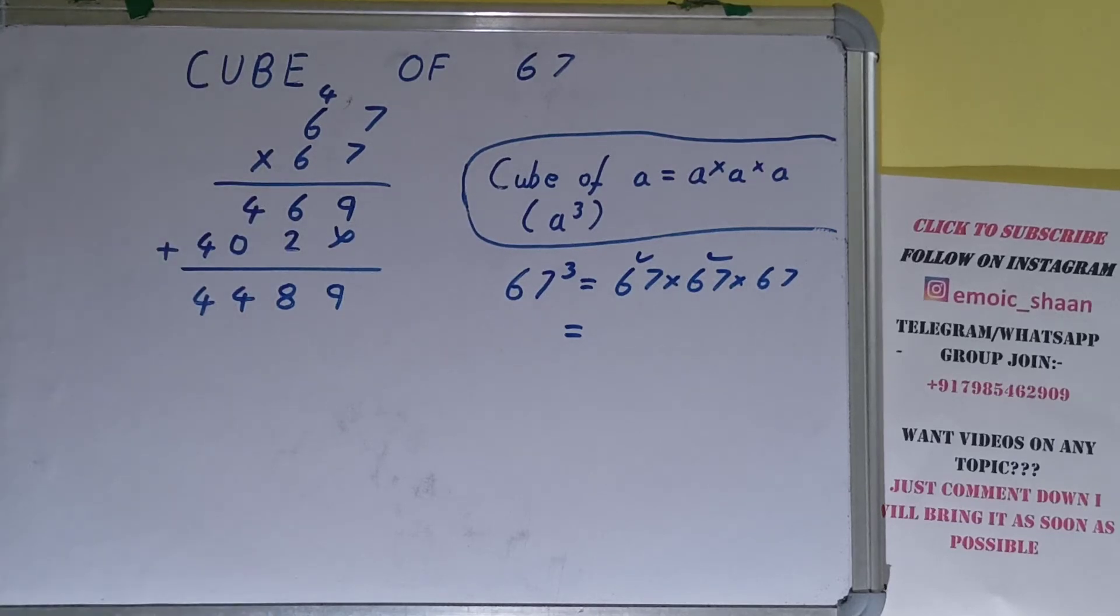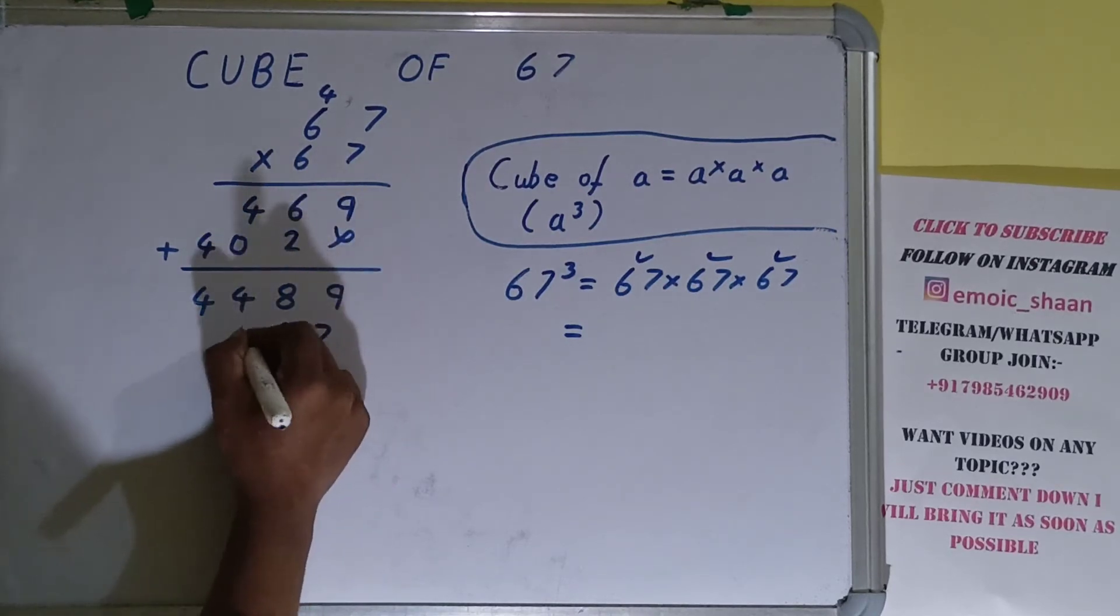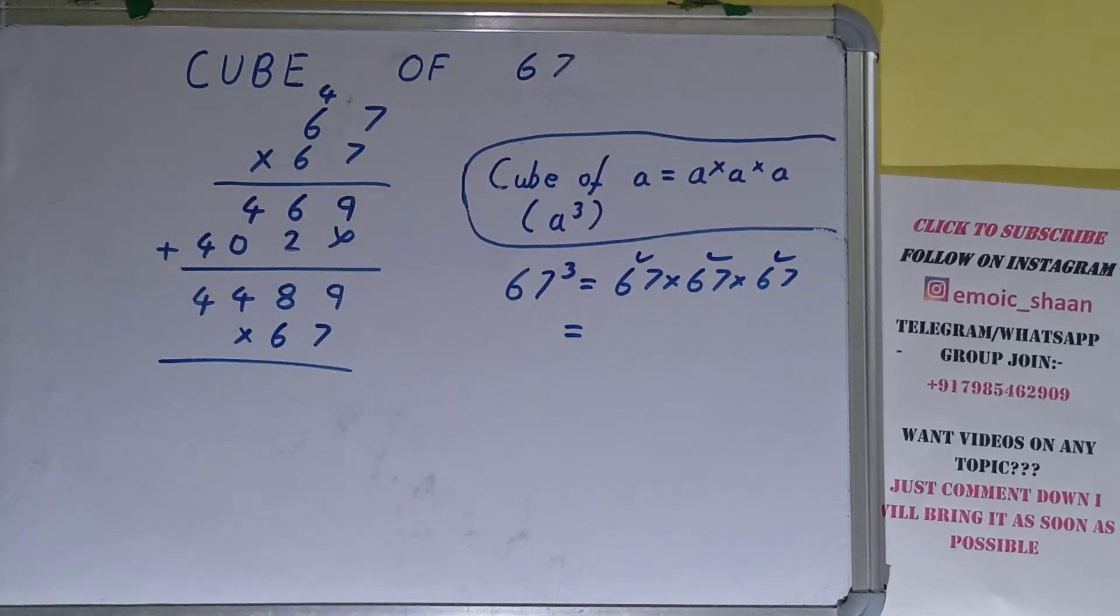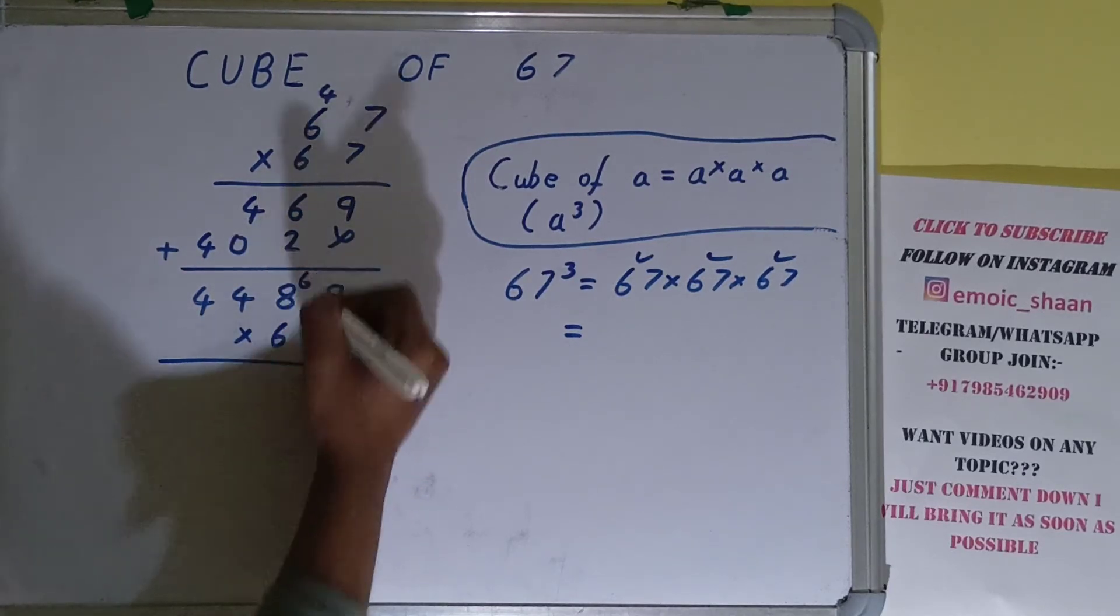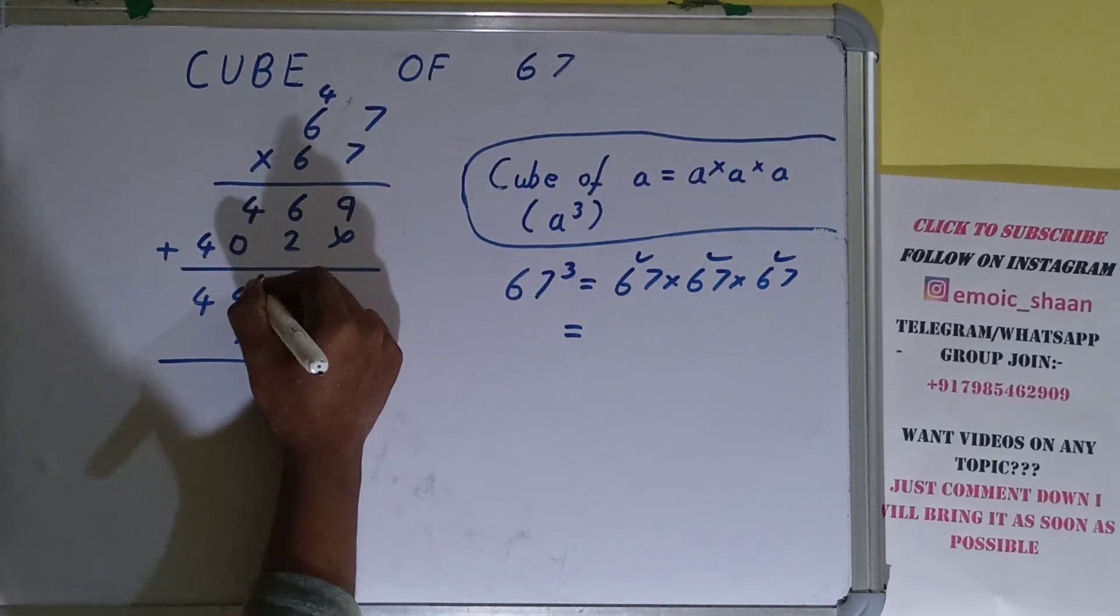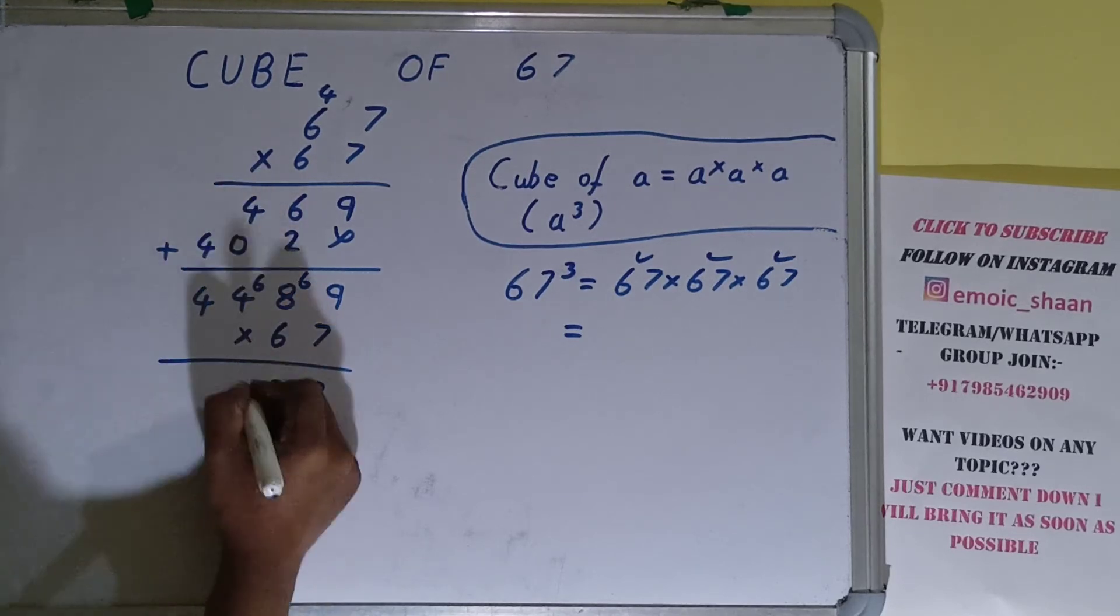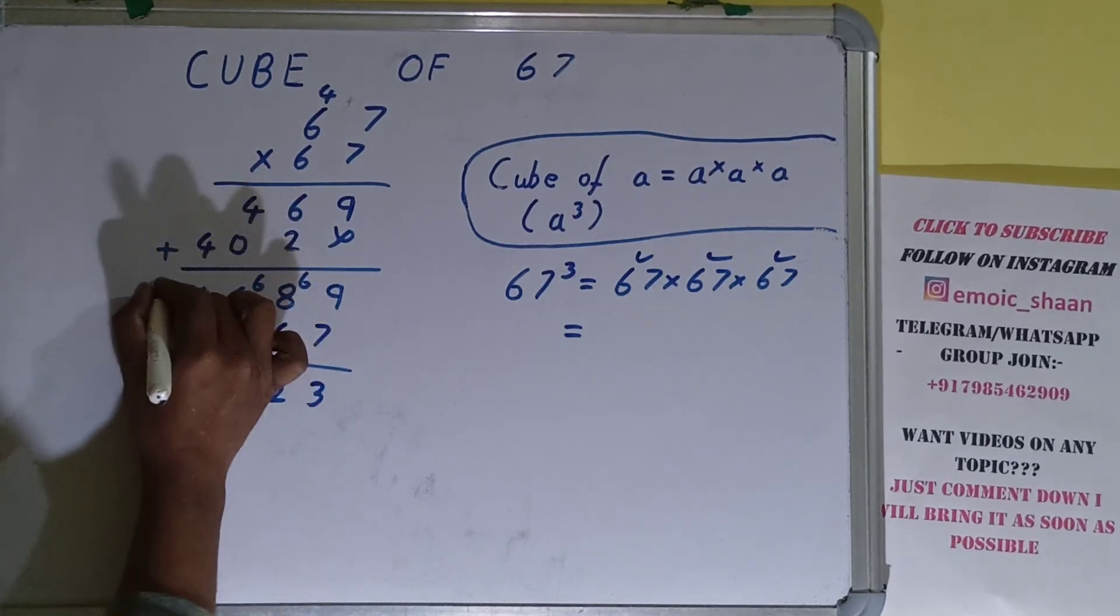Now with this result, we need to multiply by the third term, which is 67. Let's do it: 7 × 9 is 63, 6 carry. 7 × 8 is 56 plus 6 is 62, 6 carry. 7 × 4 is 28 plus 6 is 34, 3 carry.